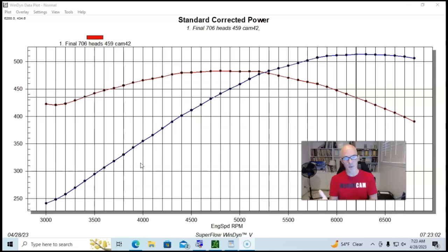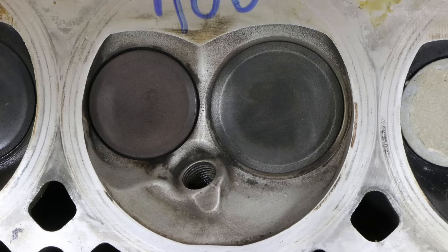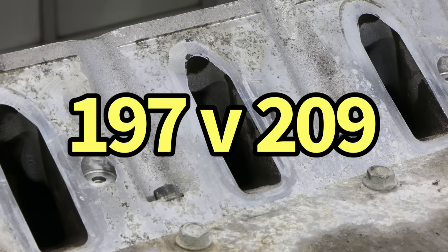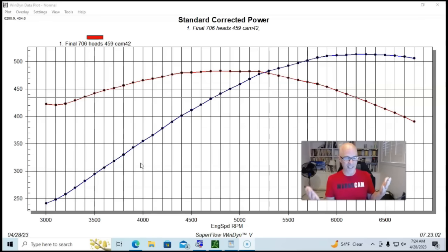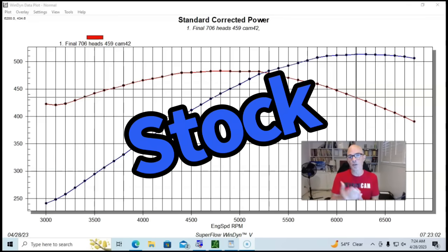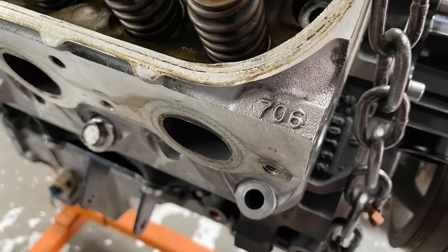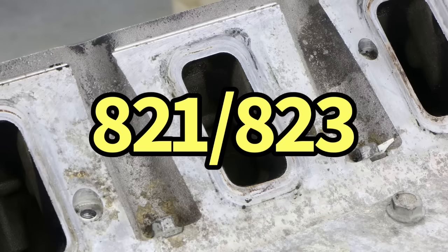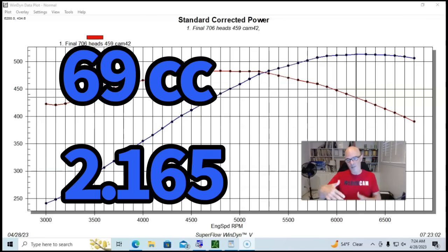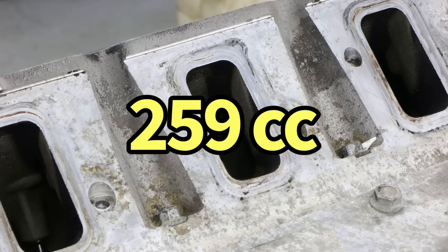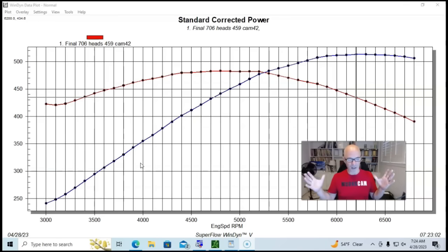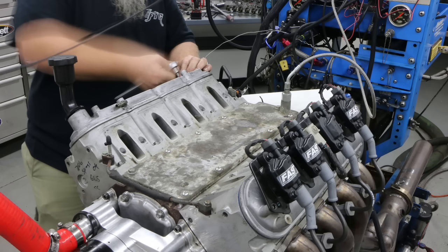The difference between the 706 and the 799 heads was about two and a half or three cc's in chamber size. And everybody points to that as all the difference. But there are a lot of other differences between those heads. There's a difference in not just chamber volume, but chamber design. There's a difference in valve size. There's a difference in port volume. So there's a lot of differences in these cylinder heads that are not just attributed to a change in static compression. And also, like I said, we're running them the way that they came from the factory.